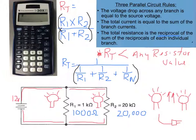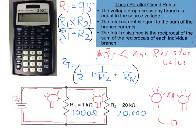So if I enter 1000 times 20,000 divided by (1000 plus 20,000), I end up with RT equal to 952.38 ohms of resistance.